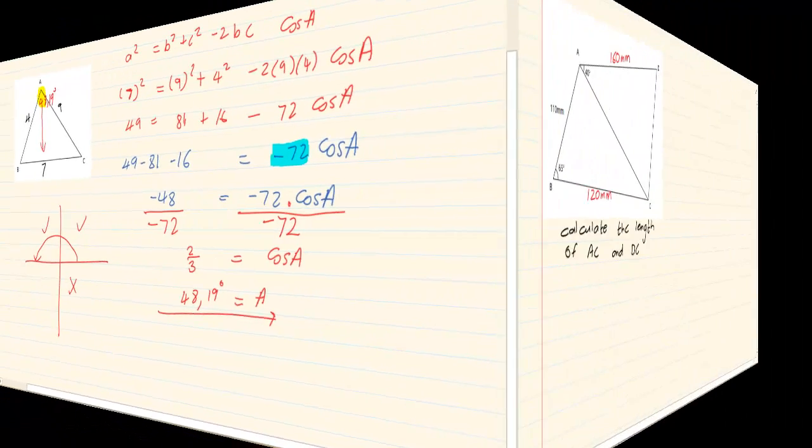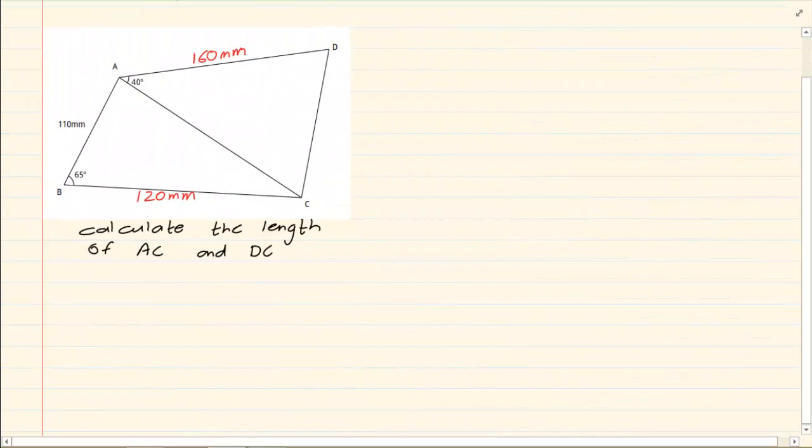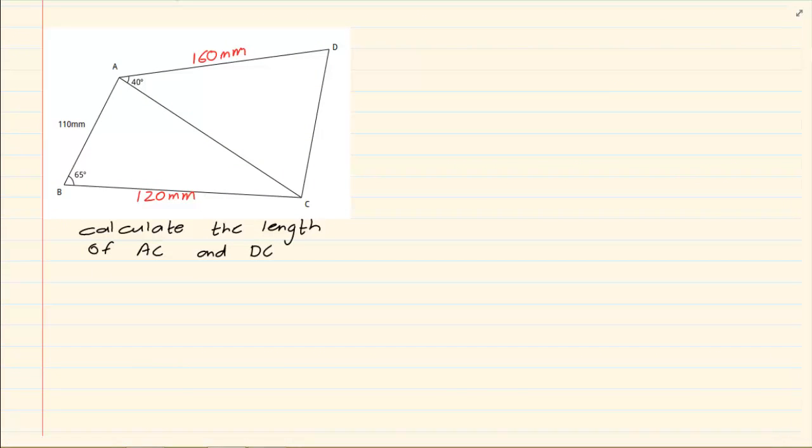Let's do one more example. When we're looking at these, these drawings tend to scare you because you don't know where you must start. Now always look at the triangle that has the most information. If you look at triangle A, D, C, I only have two things as information.